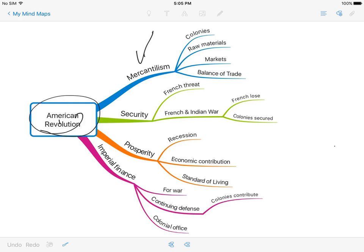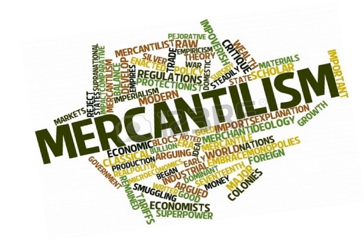The things we're going to look at as we talk about mercantilism are colonies, raw materials, markets, and this idea of balance of trade. Mercantilism is an economic idea. The words associated with it include wealth, production, government, colonies, import, export, and materials — all parts of economy. The economy is how we produce, buy, and sell things and get the things we need to live.